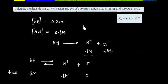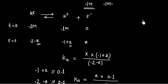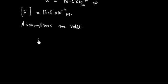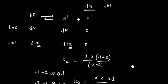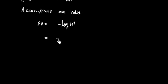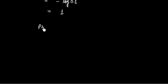Now we calculate pH. pH equals minus log of H⁺. The H⁺ is mainly coming from HCl, and 0.1 plus X is approximately 0.1. So pH equals minus log of 0.1, which equals 1. This is a very acidic solution, since pH is less than 7.